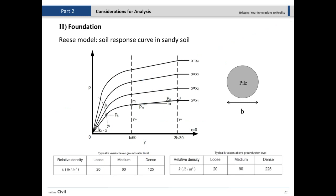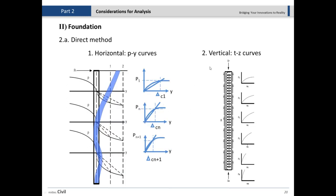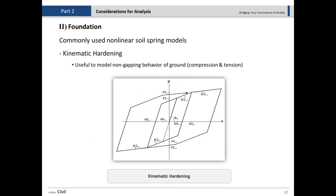There are simplified equations for calculating PY curves. One example is the Reese model for sand, showing curves for different depths along the pile and how to calculate values based on total pile width. Typical K values are provided for sand. However, to be more accurate, you should define those soil properties carefully.